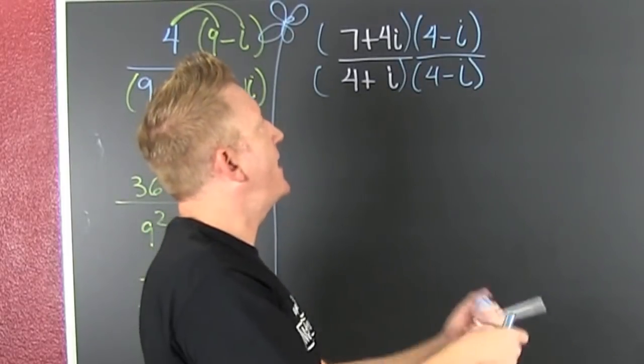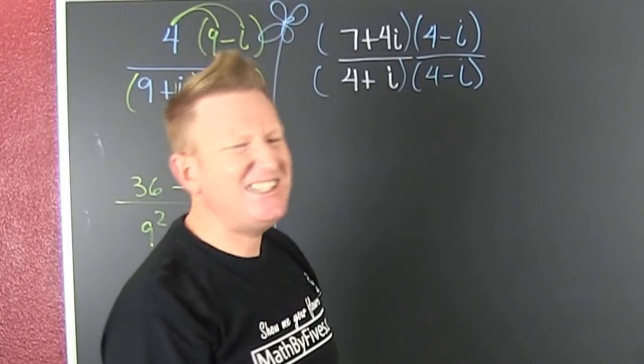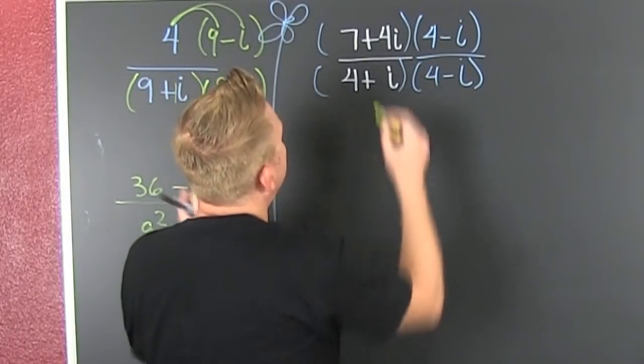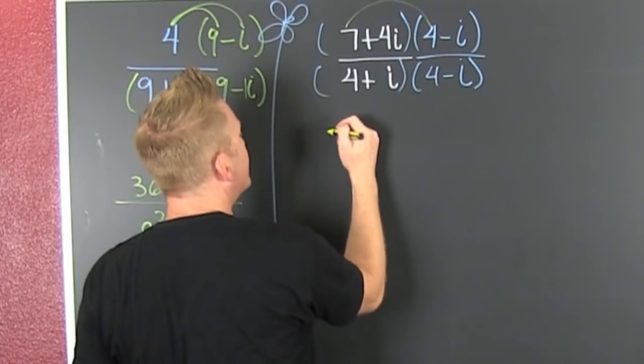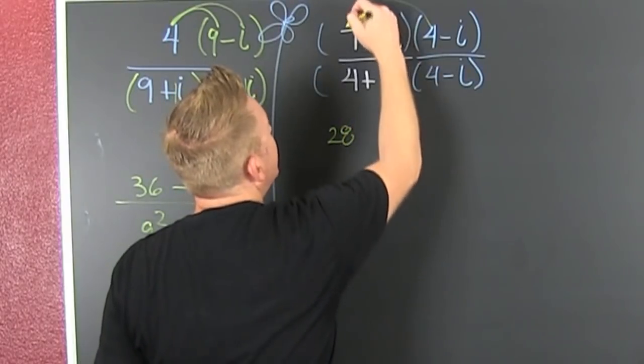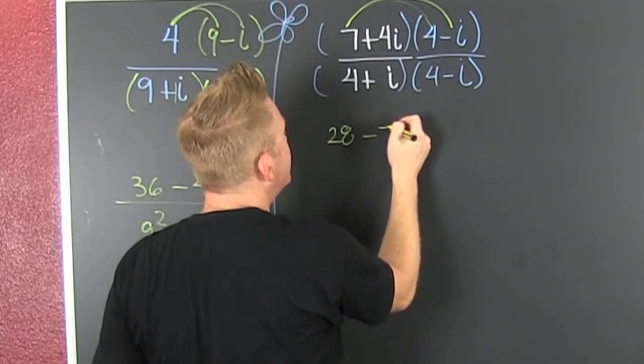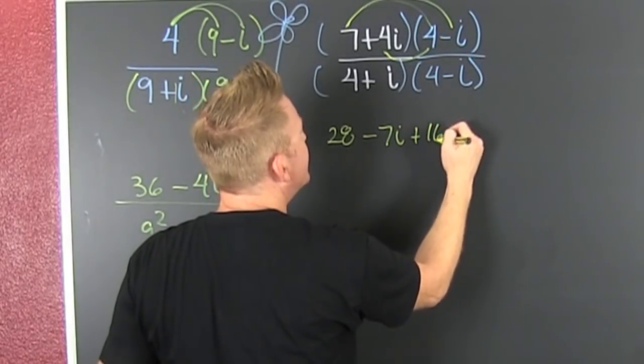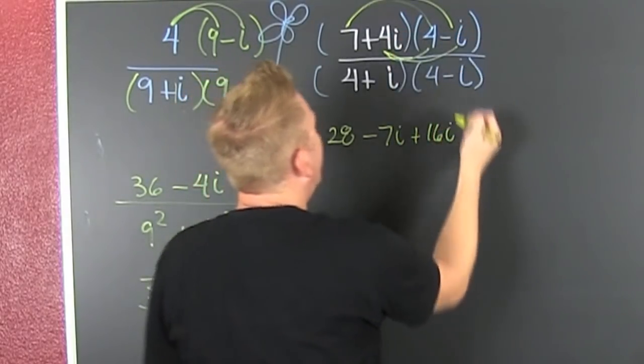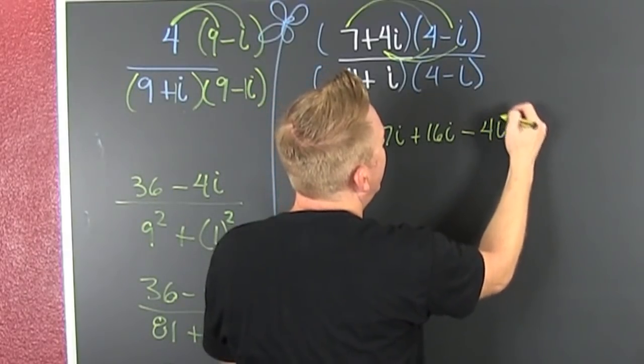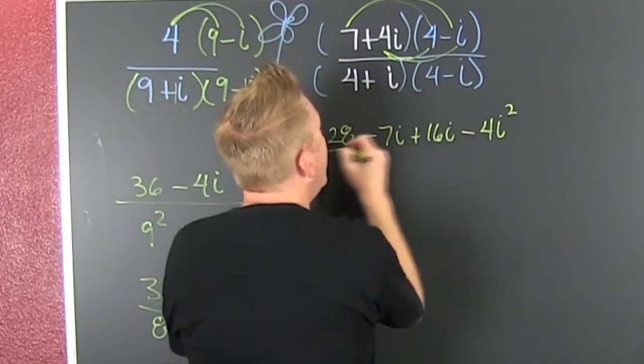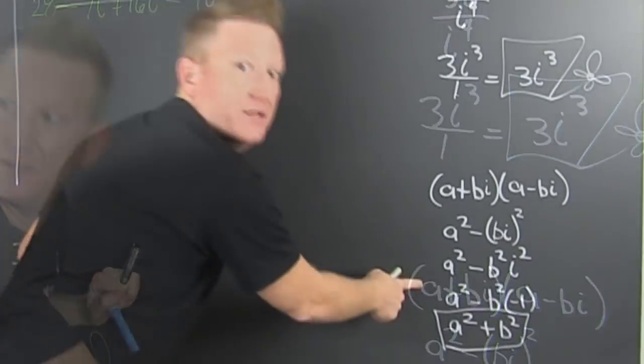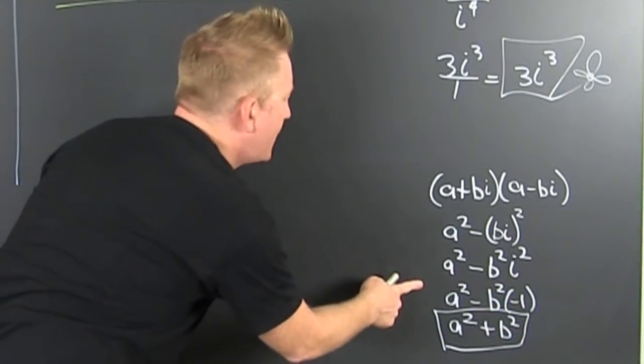And 4 minus i. Then I have the first, inner, outer, last. Ooh. Fine. I'll do it. That's 7 times that 4 is a 28. Great. That's 7 times that 1 is a minus 7i. 4 and 4 is a 16i. And then finally I have a minus 4i squared. And that's all divided, using that guy down there, the sum of squares.